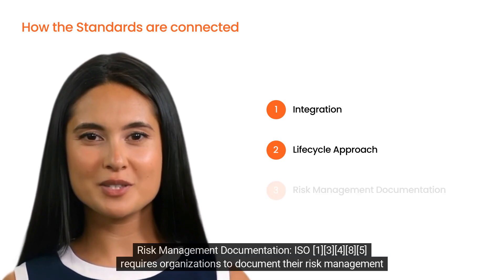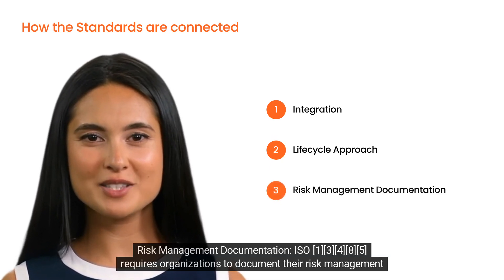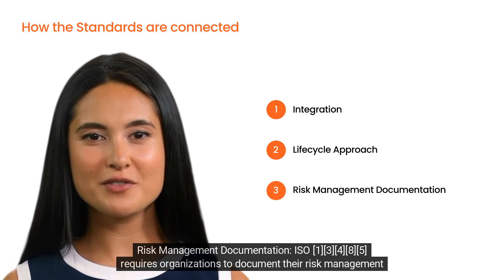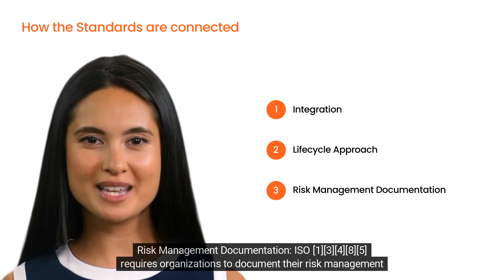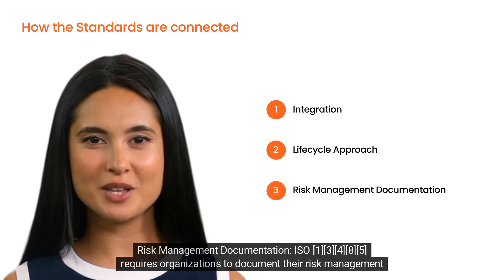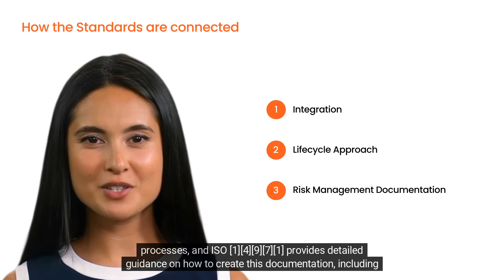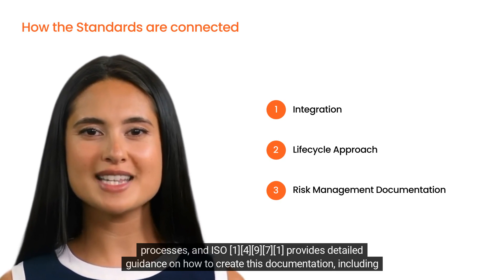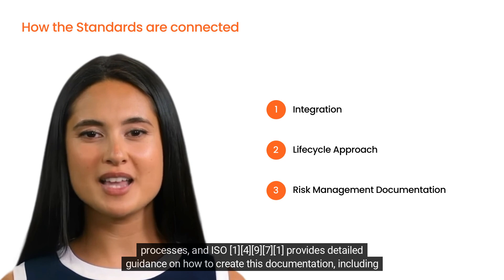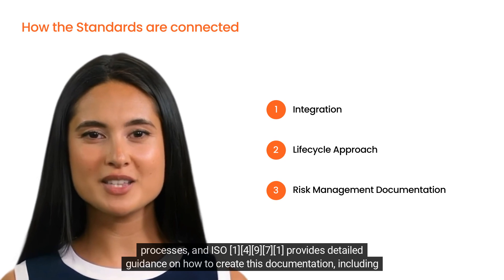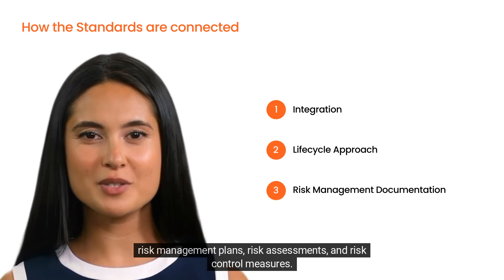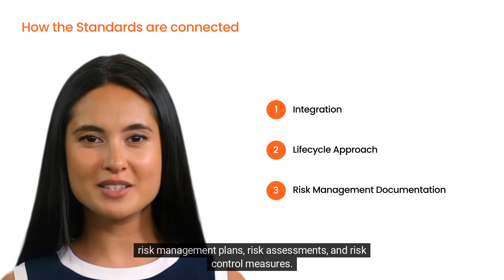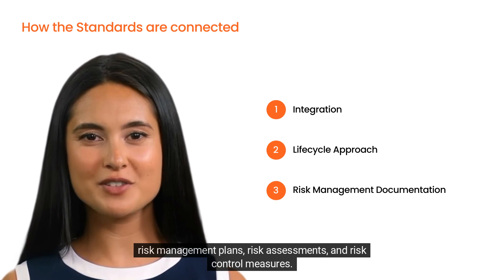Risk management documentation: ISO 13485 requires organizations to document their risk management processes and analysis, and ISO 14971 provides detailed guidance on how to create this documentation, including risk management plans, risk assessments, and risk control measures.